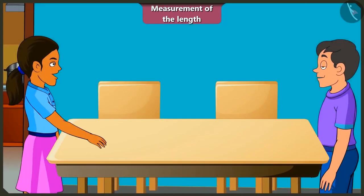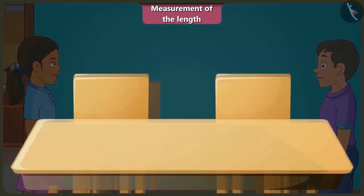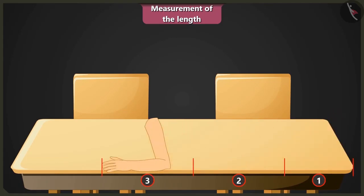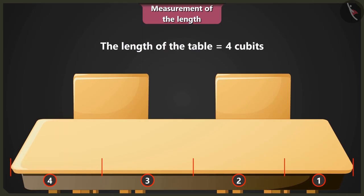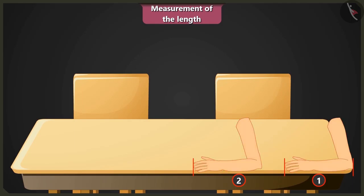Now measure this using your arm length as a unit. Then the length of this table is 1, 2, 3 and 4. The length is 4 cubit length of my arm. No, Gertu, while measuring the length of the table, you have left some space between the two arm lengths. In this way, you can never get the measurement correct.